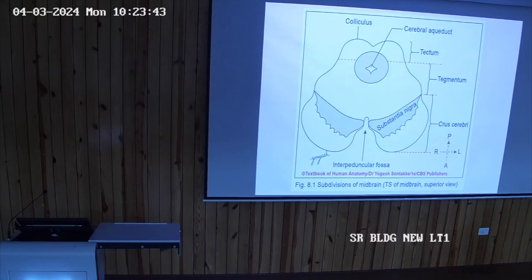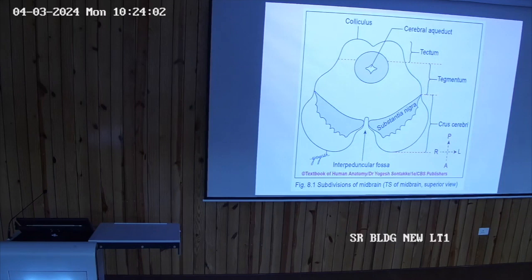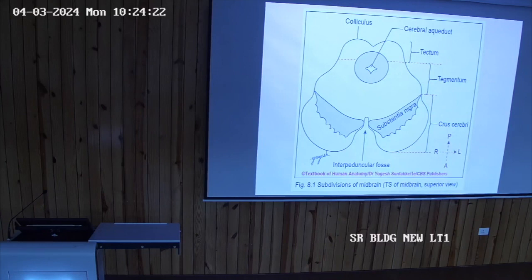In the middle you can see the aqueduct of Silvius — the small cavity of the midbrain. The grey matter surrounding the aqueduct is known as the periaqueductal grey matter. 'Peri' means surrounding. So the periaqueductal grey matter surrounds the aqueduct of the midbrain.